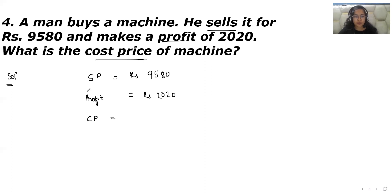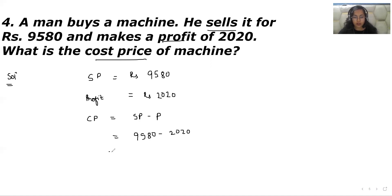The formula for cost price when selling price and profit are given is selling price minus profit. If you want to find the initial price of the machine, you subtract the profit. So cost price equals Rs 9,580 minus Rs 2,020. That gives us: 0, 0, 8 minus 2 is 6, and 9 minus 2 is 7. So the cost price of that machine is Rs 7,560.